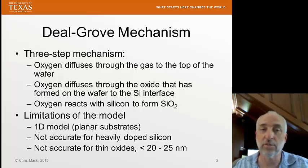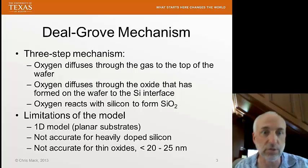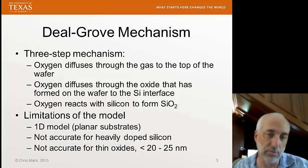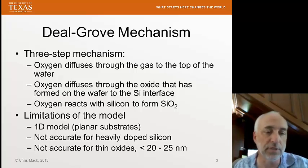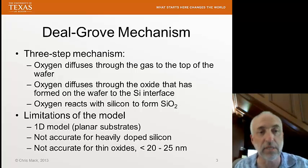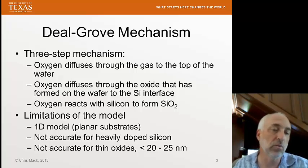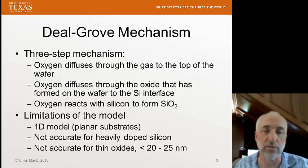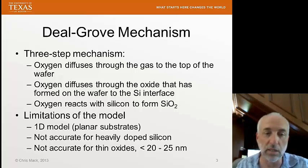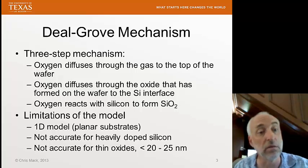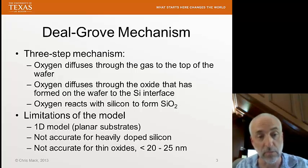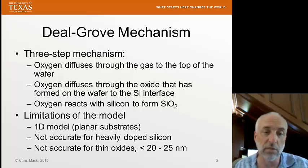There are some limitations to the Deal-Grove model. First, it's a 1D model — it only talks about growth in one dimension on planar substrates. If we need to model growth on a more complicated surface with topography in 2D or 3D, we need different models. There are software packages for 2D and 3D modeling, but we'll only be dealing with the 1D model here.